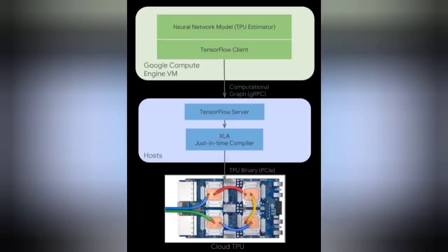TPU architecture. There are two TPU architectures: software architecture and hardware architecture. The TPU estimators are a set of high-level APIs built upon estimators which simplify building models for Cloud TPU and extract maximum TPU performance. When writing a neural network model that uses Cloud TPU, you should use the TPU estimator APIs. The TPU estimators translate your programs into TensorFlow operations, which are then converted into a computational graph by a TensorFlow client. A TensorFlow client communicates the computational graph to a TensorFlow server, which runs on a Cloud TPU server.